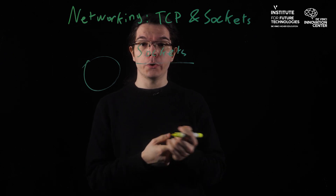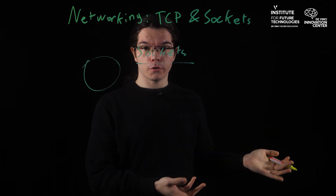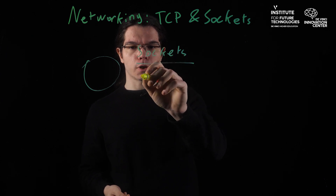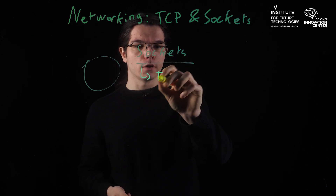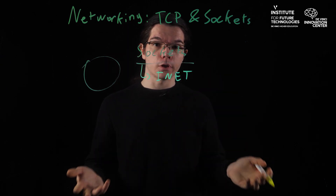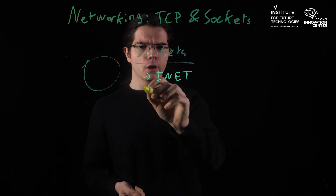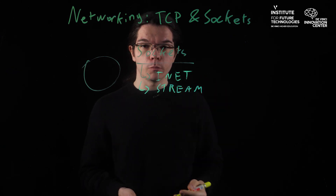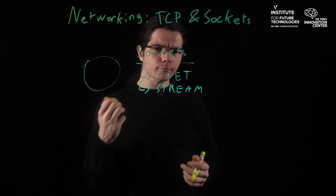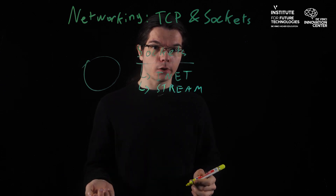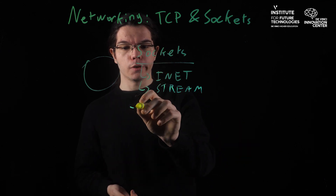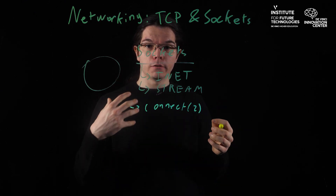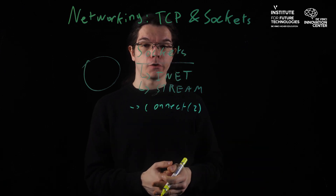You are going to use sockets: first create the socket, then connect it to a server by giving your computer the IP address you want to connect to. For example, you create a socket and tell it the socket is going to be of type INET — so internet network, IP address version 4, not version 6. And you can say we are going to use a stream, which just means you are going to use TCP. Then you connect the socket using the connect system call, giving it the IP address and the port number, and the socket is connected.